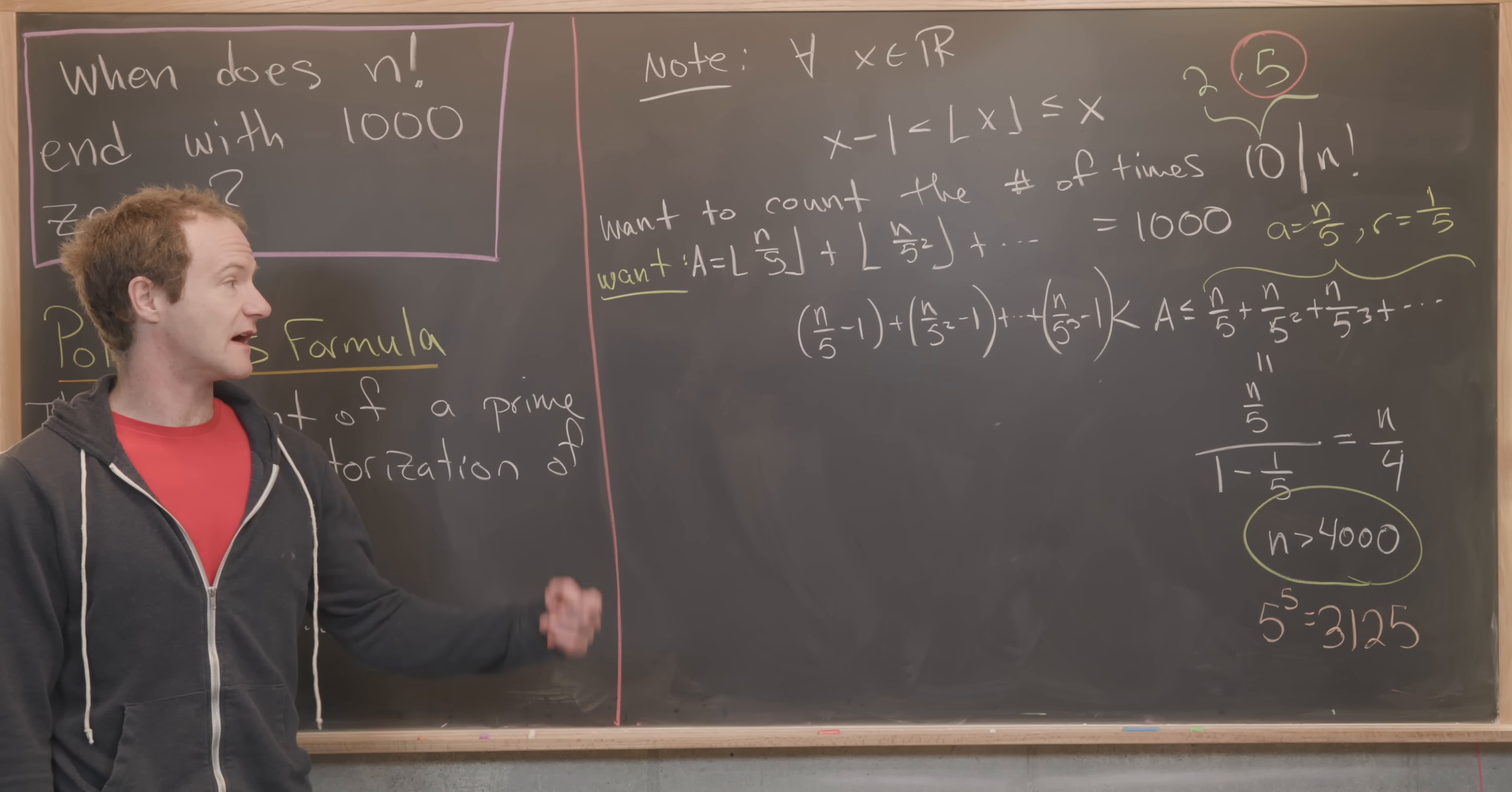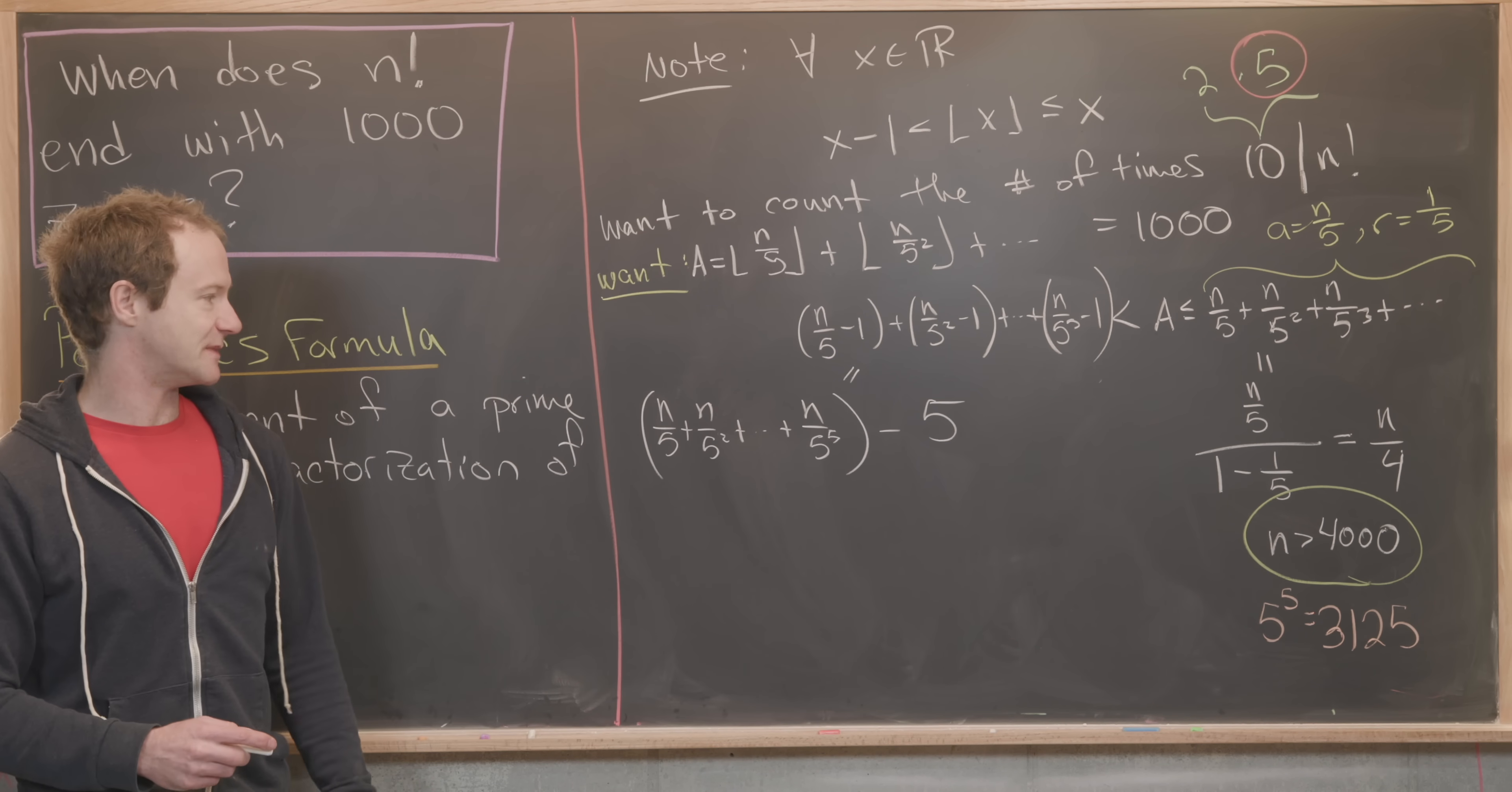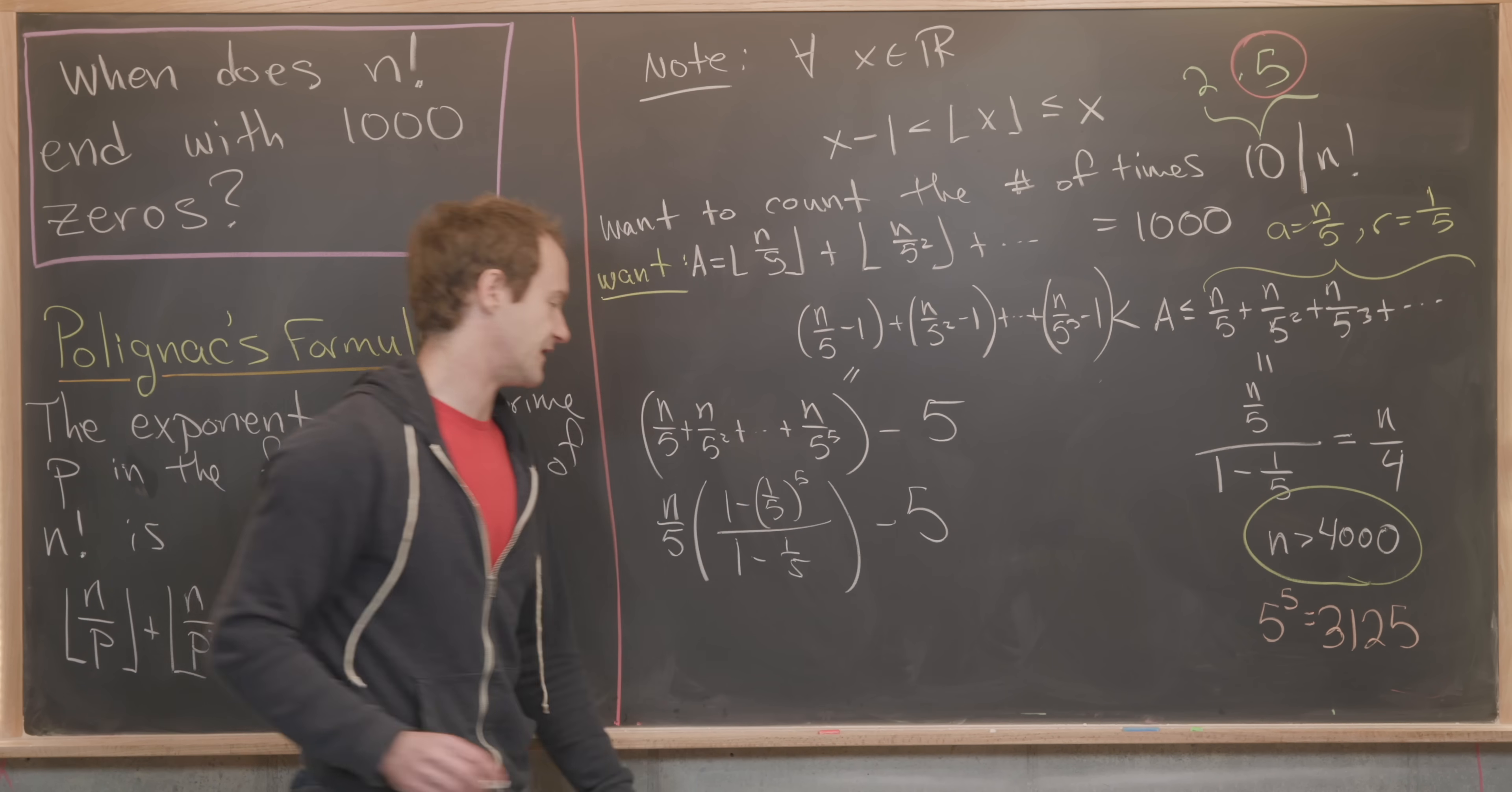Notice that we've got a finite geometric series, and then a little bit of another part to it as well. This is going to be n over five plus n over five squared, all the way up to n over five to the fifth, minus five. As we did for the sum of an infinite geometric series, we can do the same kind of thing for the sum of a finite geometric series. What we'll see is that this is equal to n over five times one minus one over five to the fifth over one minus one over five, and then minus five at the end.